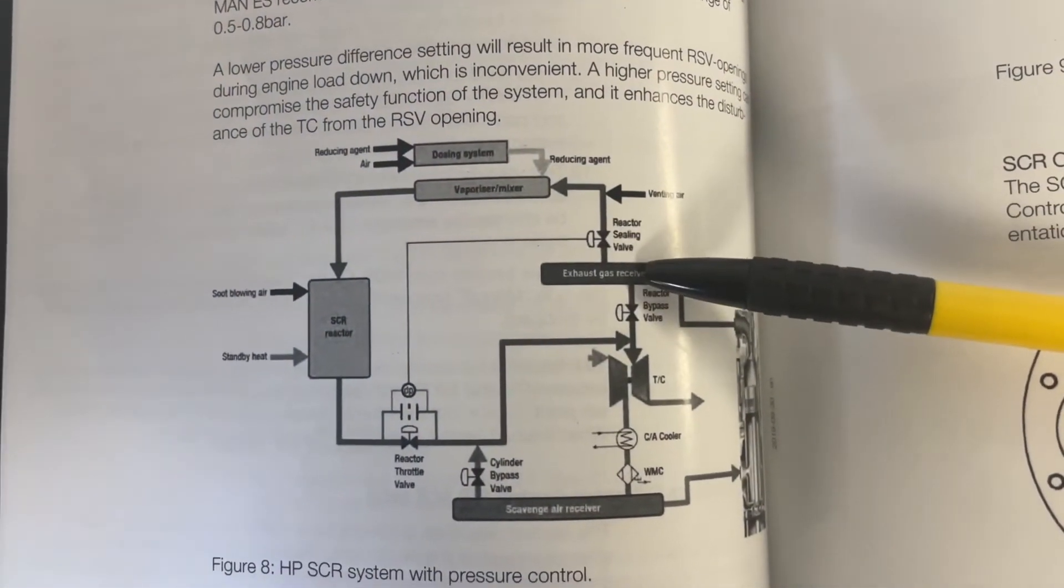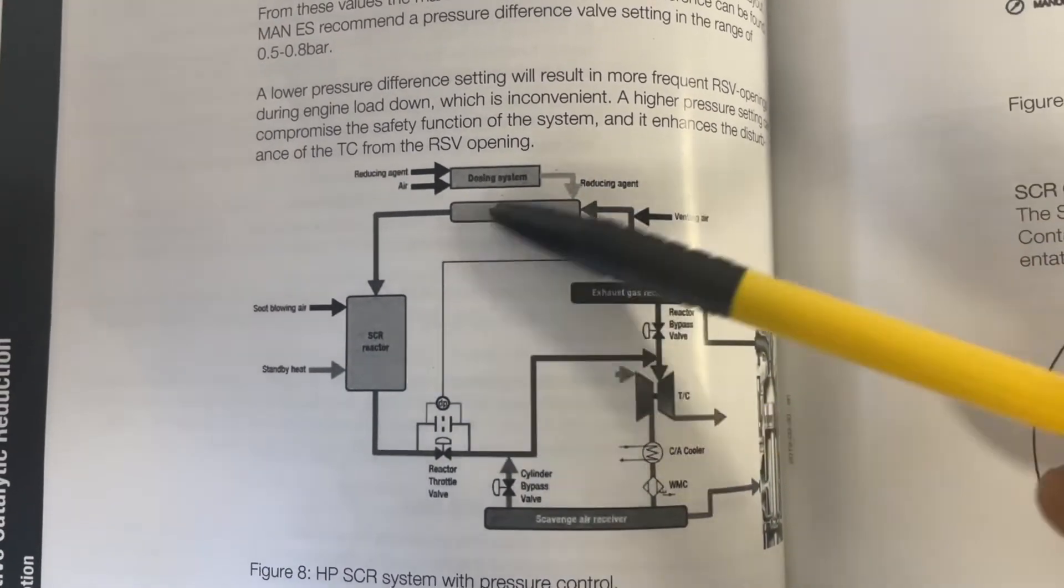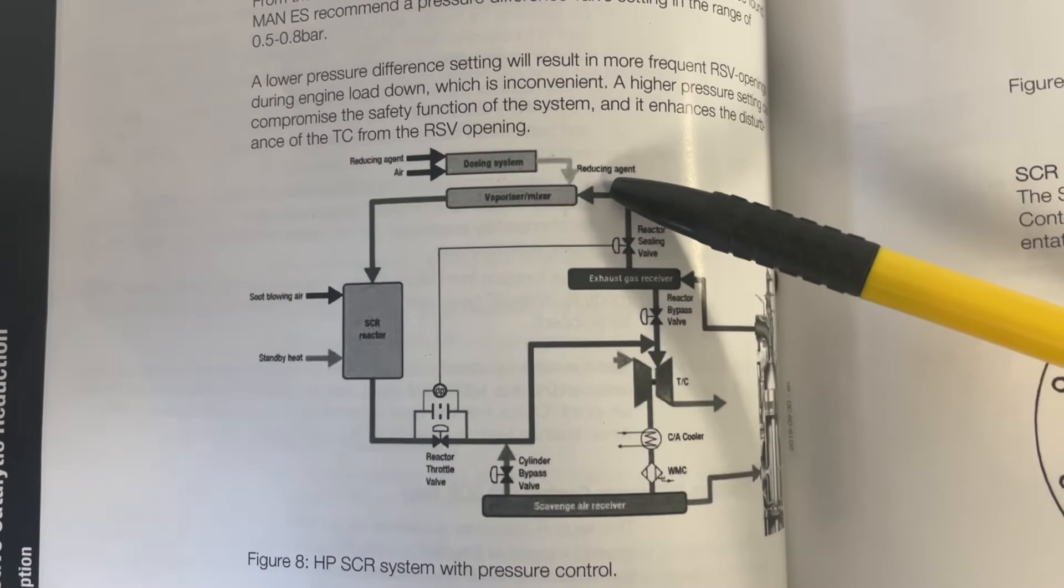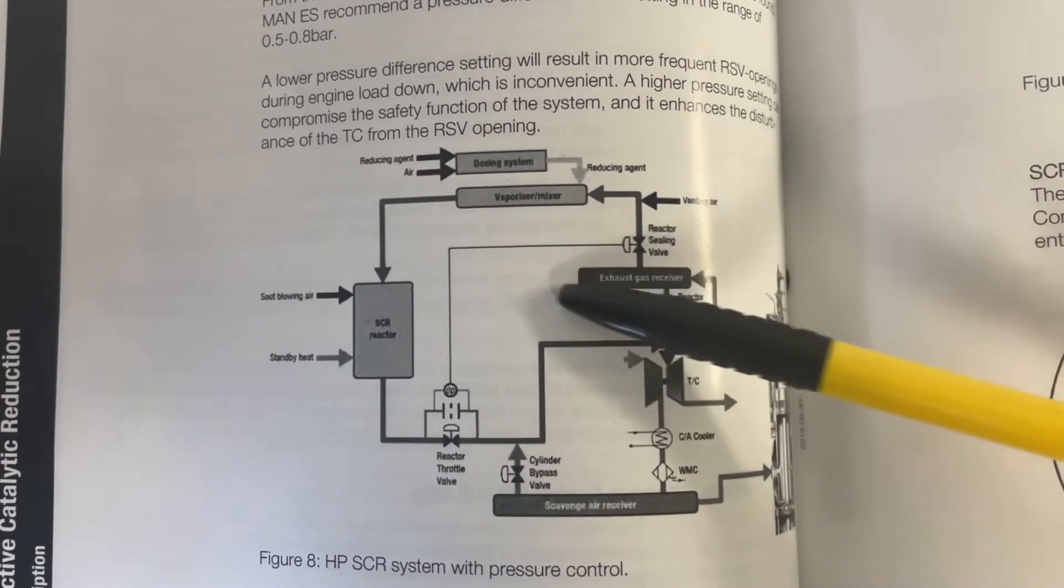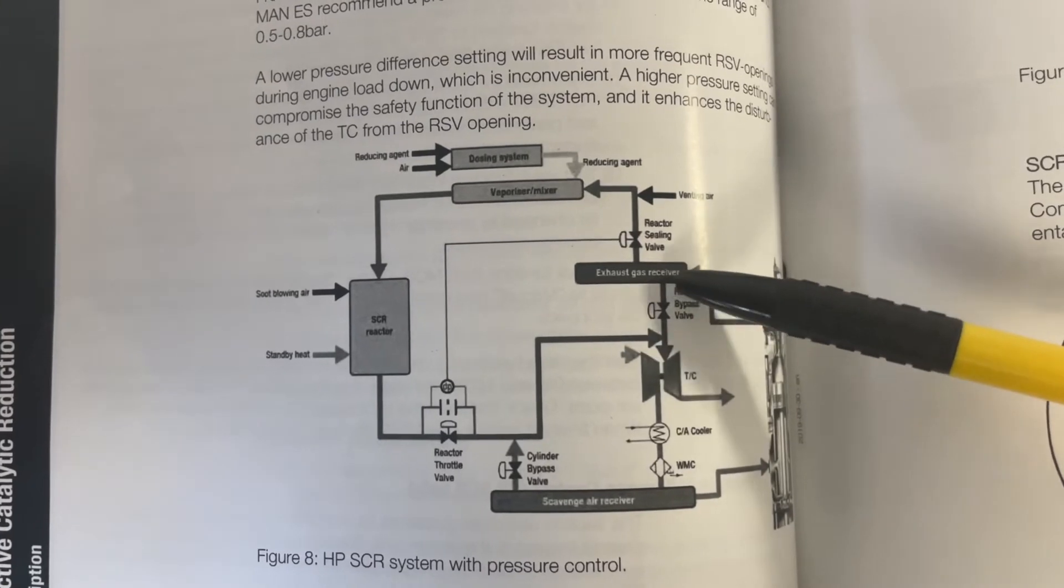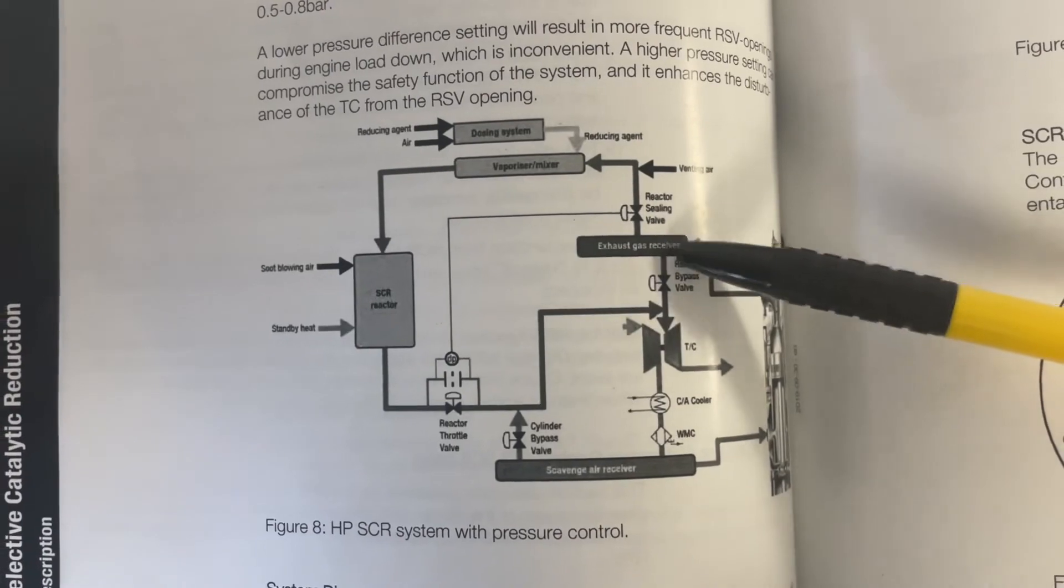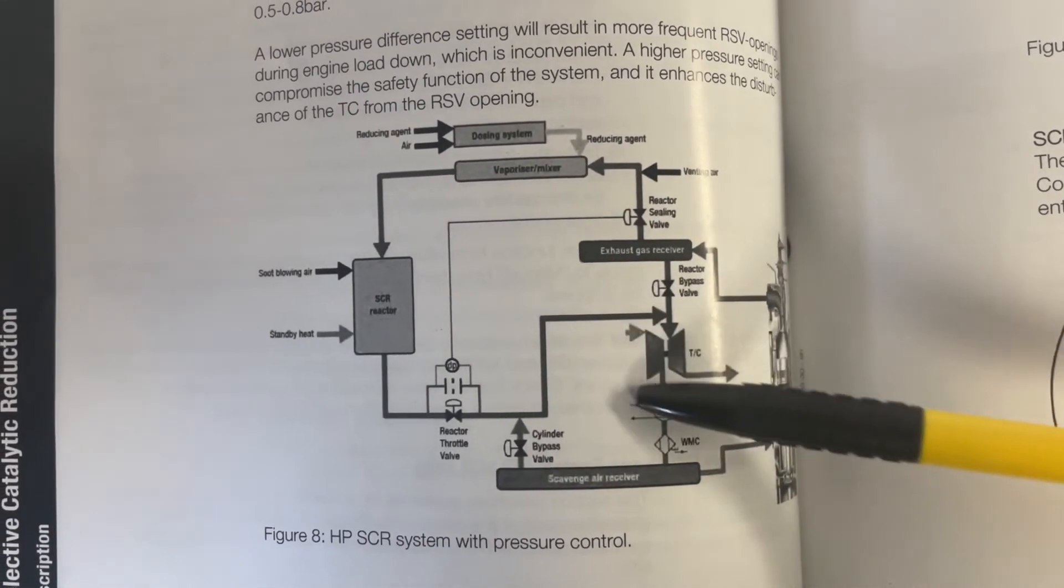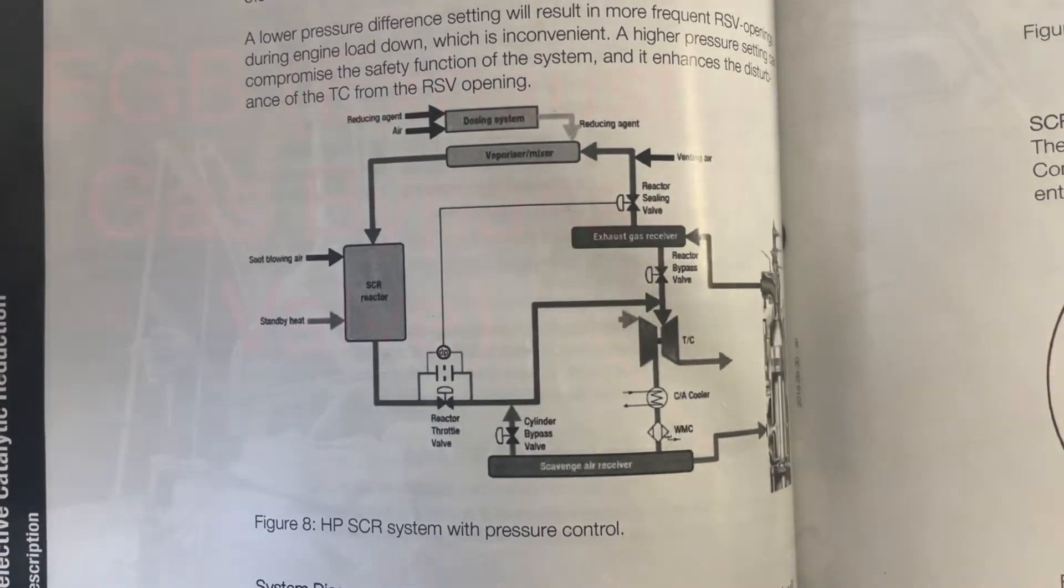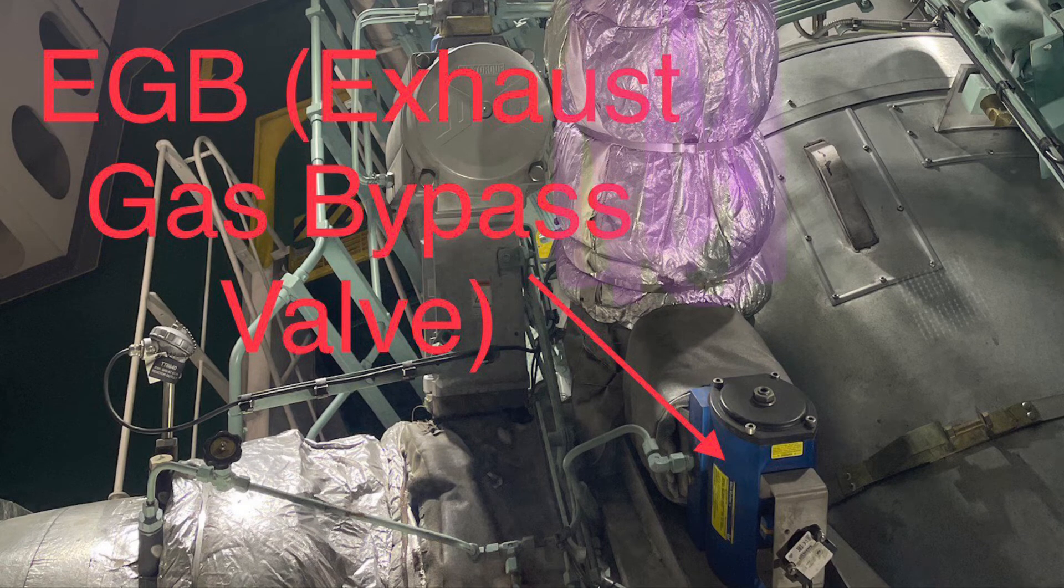This resulting pressure buildup in the exhaust gas receiver must be controlled to avoid inappropriate scavenged air backflow and unwanted turbocharger disturbance. When this happens, the EGB will open momentarily to reduce the exhaust gas receiver pressure.